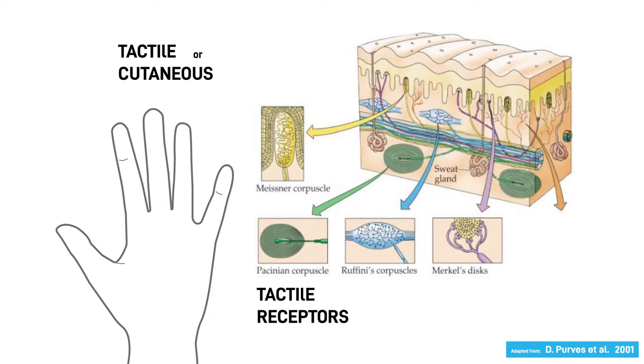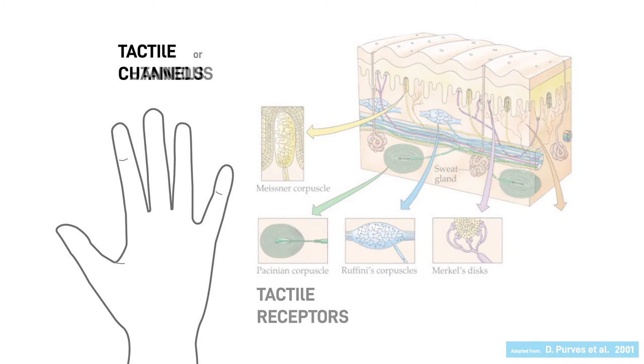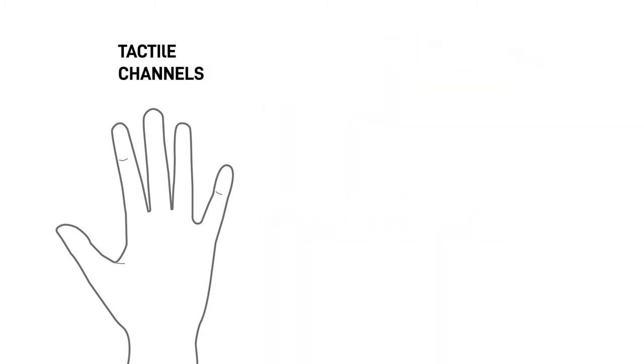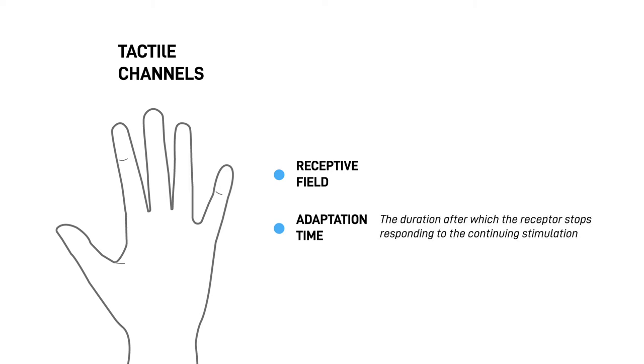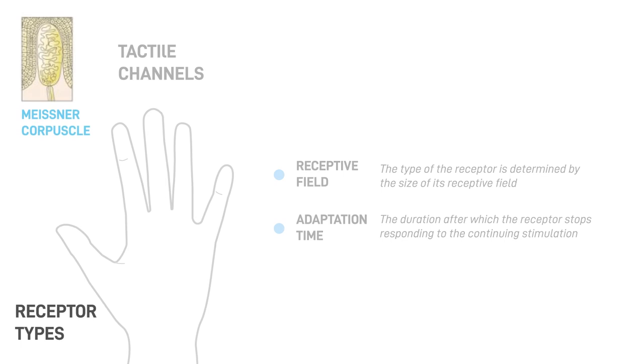Scientific studies have discovered four types of tactile channels that are mainly classified by a receptive field and by their adaptation time. Adaptation time is the duration after which the receptor stops responding to the continuing stimulation. The type of receptor is determined by the size of its receptive field. Let's take a look at four types of receptors.